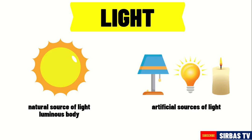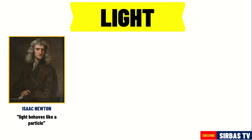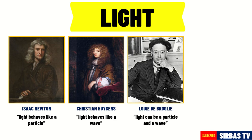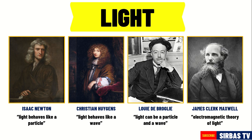Different scientists spent a lot of time understanding how light behaves. These include Isaac Newton, who believed that light behaves like a particle; Christian Huygens, who believed that light behaves like a wave; Louis de Broglie, who believed that light can be both a particle and a wave; and James Clerk Maxwell, who proposed the electromagnetic theory of light, among others. Their combined investigations enabled us to understand the behavior of light even better.